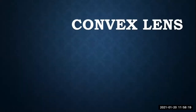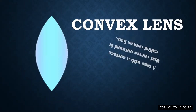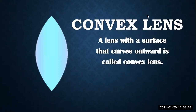Let's discuss the types one by one. Type number one is convex lens. A lens with a surface that curves outward is called a convex lens. Looking at the diagram, this is a transparent material — it can be made of glass, plastic, or any other transparent material — and it is curved in shape.